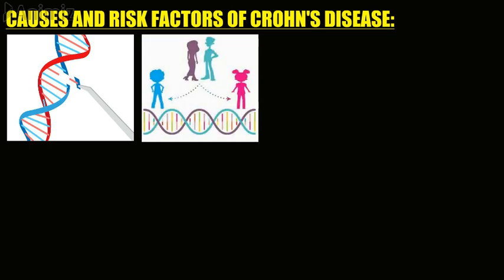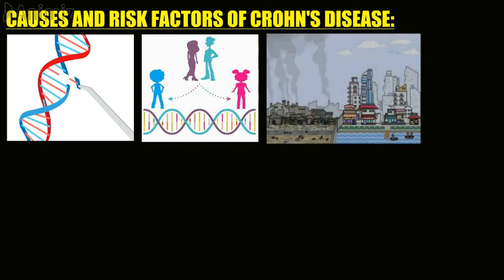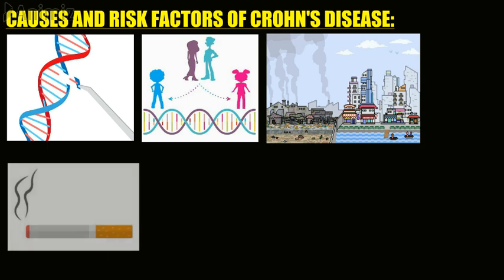Family history is another risk factor. Crohn's disease appears to run in families — about 5 to 20 percent of people with Crohn's disease have a parent or sibling with it. If one of your parents has Crohn's disease, your risk of developing it is about 7 to 9 percent. Where you live also matters: Crohn's disease is more common in developed countries than developing countries, and more common in urban than rural areas.